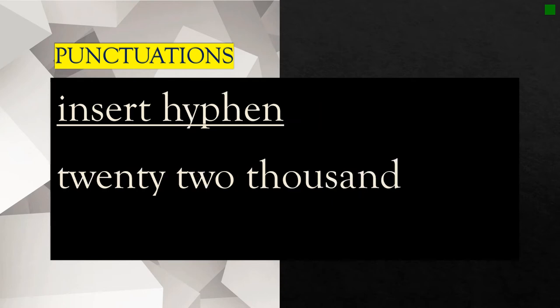Another punctuation is the hyphen. Hyphens are usually used to separate parts of words. Here we have the example 22,000 and 22 needs to have a hyphen. So we're going to insert a hyphen, and we're using this symbol. So that's the symbol for a hyphen, a double hyphen.